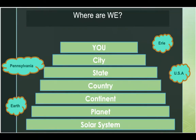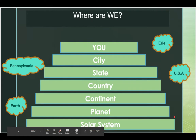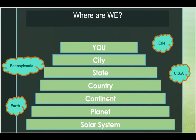Boys and girls, this is a Where Are We chart, and we will be using this throughout our domain on the history of the earth. We have started learning about our solar system in our last knowledge domain, and the planet we live on — planet earth. The continent we live on is North America, the country is the United States of America, the state is Pennsylvania, our city is Erie, and then there's us — you, boys and girls.